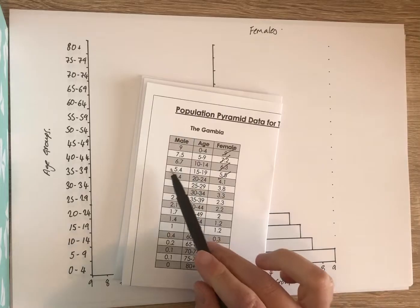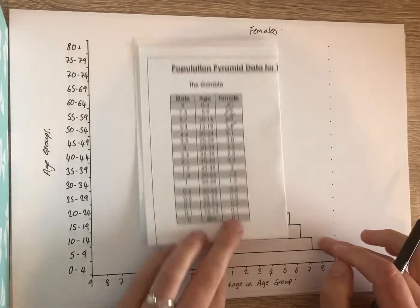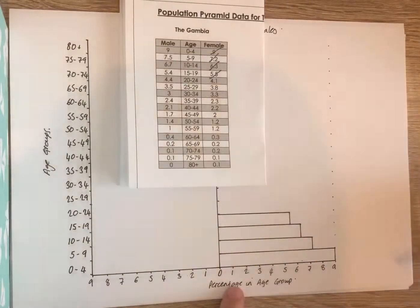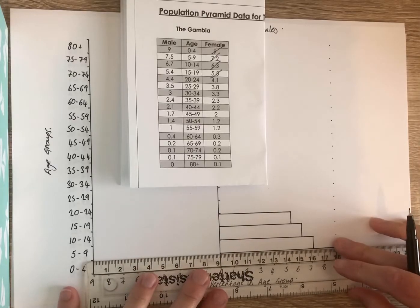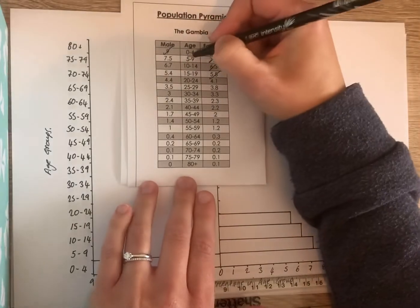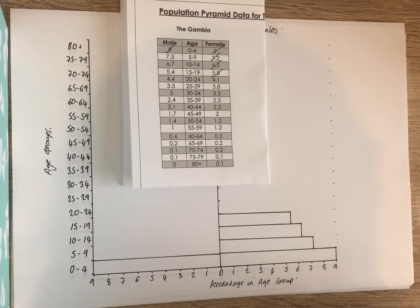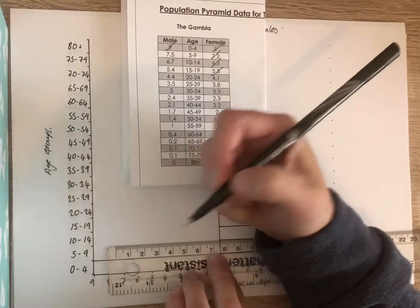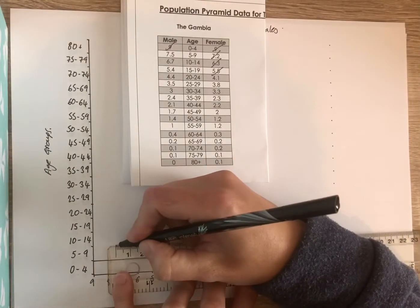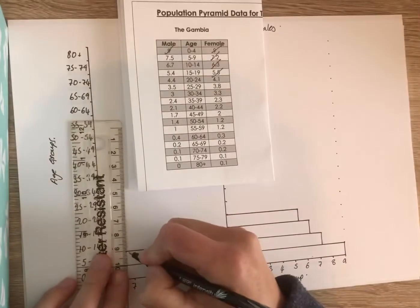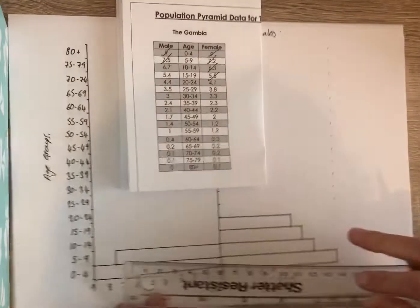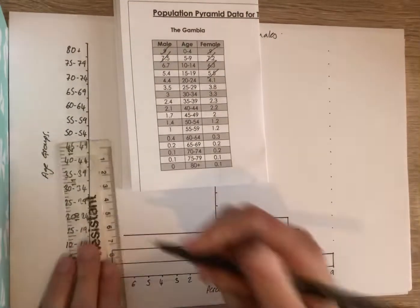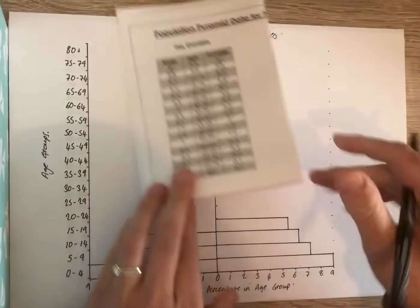Now when you come to plot the males, this is where it gets slightly trickier. Remember, we're doing this one in reverse. You always start from the 0 in the middle — it's a population pyramid, we start inwards and go outwards. So males age 0 to 4, again we've got 9%, and I draw my line. Males age 5 to 9, 7.5% of the entire population is male age 5 to 9. Every centimetre equates to every percentage. 7.5% and I go down. Males age 10 to 14, 6.7%. And I carry on until I complete my whole population pyramid.